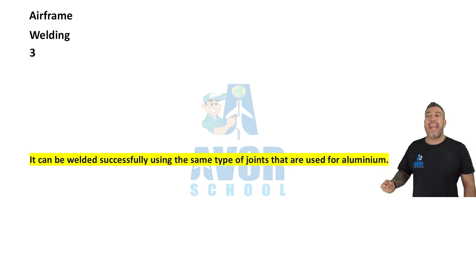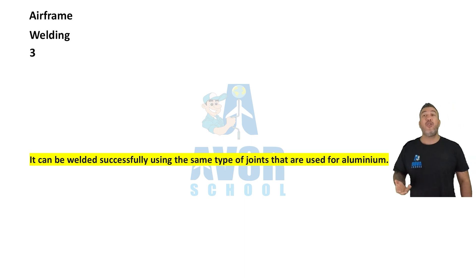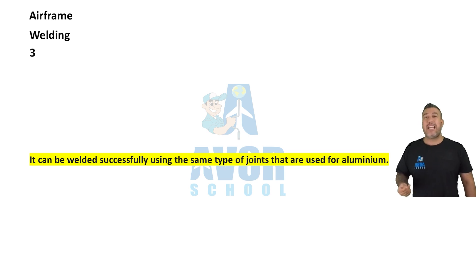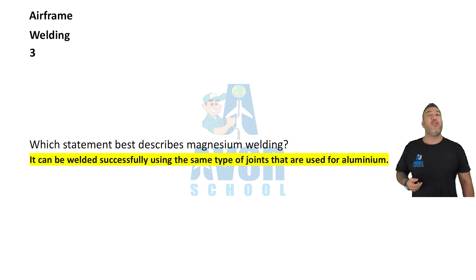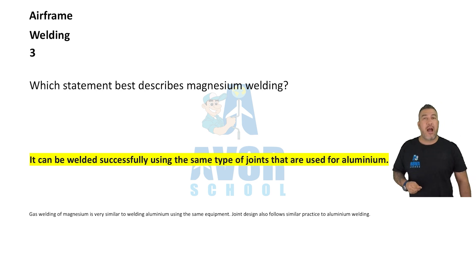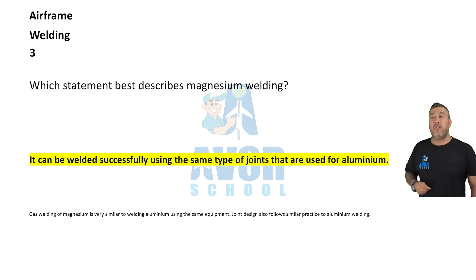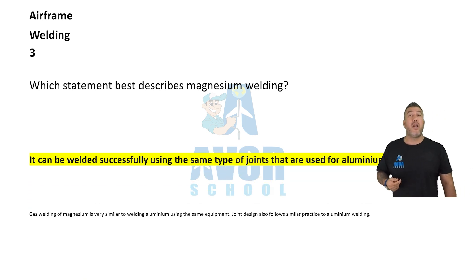Number three: Which statement best describes magnesium welding? It can be welded successfully using the same type of joints that are used for aluminum.